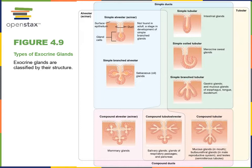Simple branched tubular glands are found in the stomach, esophagus, tongue, and duodenum. These glands have multiple elongated tubular secretory units that come together with only one duct and no branching of the duct. Compound glands have branching in the duct structure. The mammary gland has a compound alveolar structure with multiple levels of branching in the duct system, and the secretory units branch into multiple sacs or alveolar shapes.